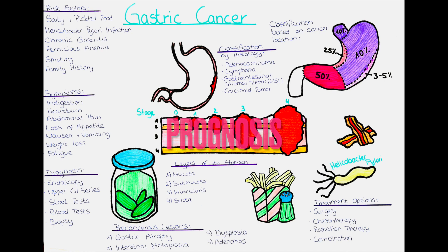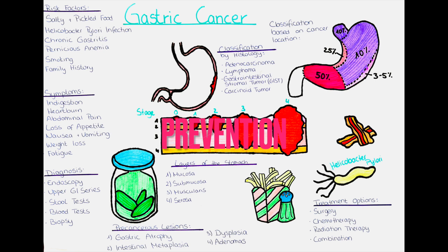What is the prognosis for gastric cancer? The prognosis depends on the stage of the cancer at the time of diagnosis. Early-stage gastric cancer has a higher chance of being cured, while more advanced stages may be more difficult to treat. The overall five-year survival rate for gastric cancer is around 31%. Prevention of gastric cancer involves reducing the identified risk factors, such as avoiding a diet high in salted, smoked and pickled foods, treating Helicobacter pylori infection, and quitting smoking. Regular check-ups with a doctor can also help detect any early signs of gastric cancer.